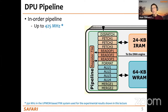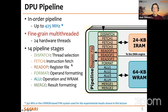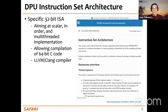For the experiments in this lecture, we used a system running at 350 MHz. The pipeline is fine-grained multi-threaded, holding up to 24 hardware threads, with 14 pipeline stages. The ISA of this UPMEM PIM architecture is a specific 32-bit ISA. It also allows compilation of 64-bit code, and the compiler is LLVM-based.